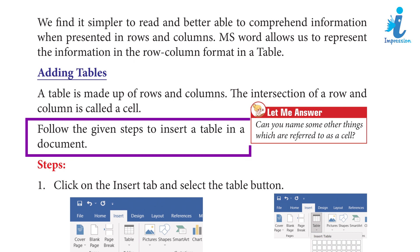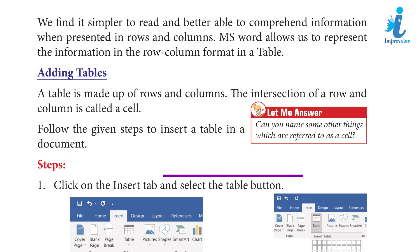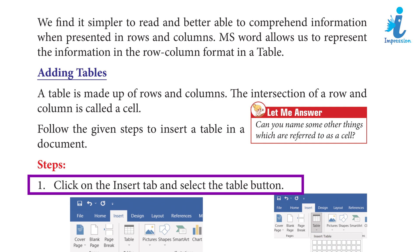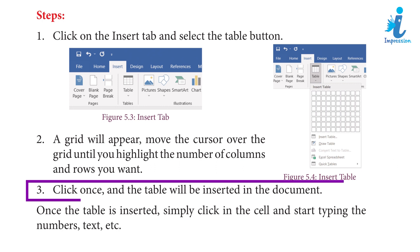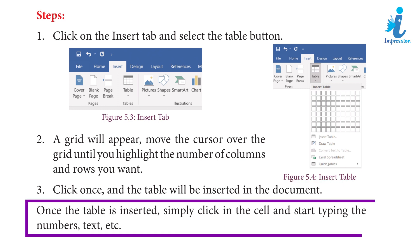Follow the given steps to insert a table in a document. Step 1: Click on the Insert tab and select the Table button. Step 2: A grid will appear; move the cursor over the grid until you highlight the number of columns and rows you want. Step 3: Click once and the table will be inserted in the document. Once the table is inserted, simply click in the cell and start typing numbers, text, etc.